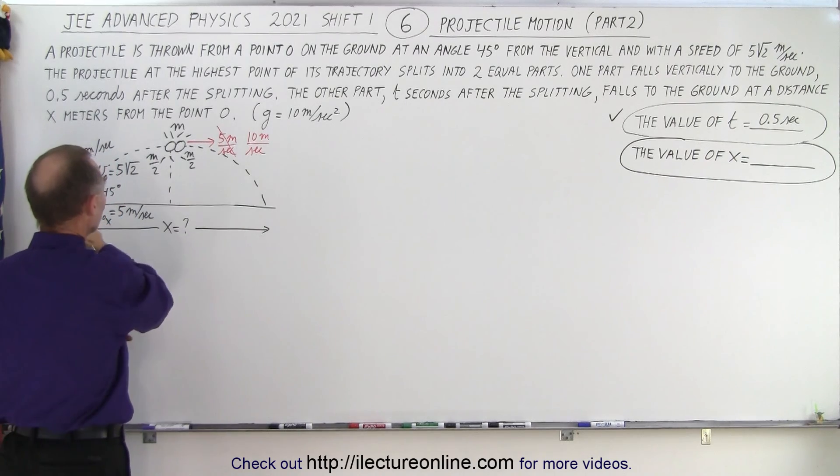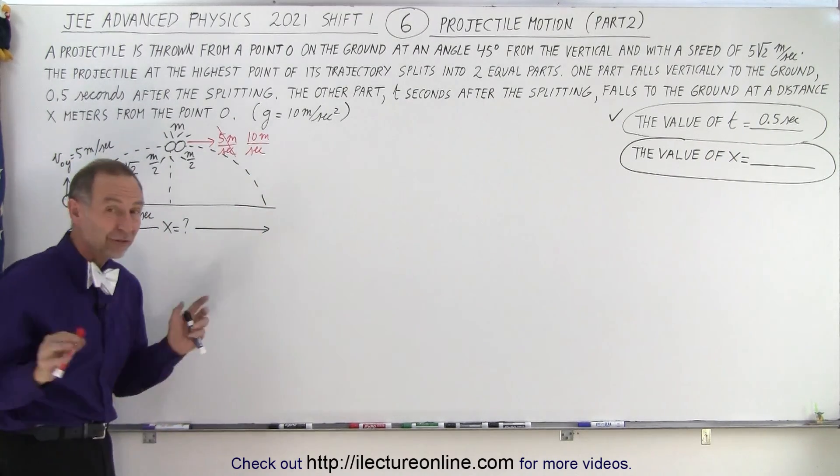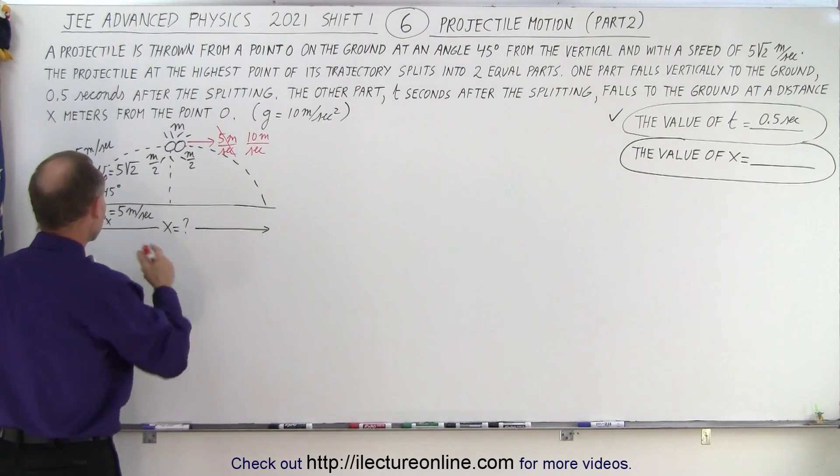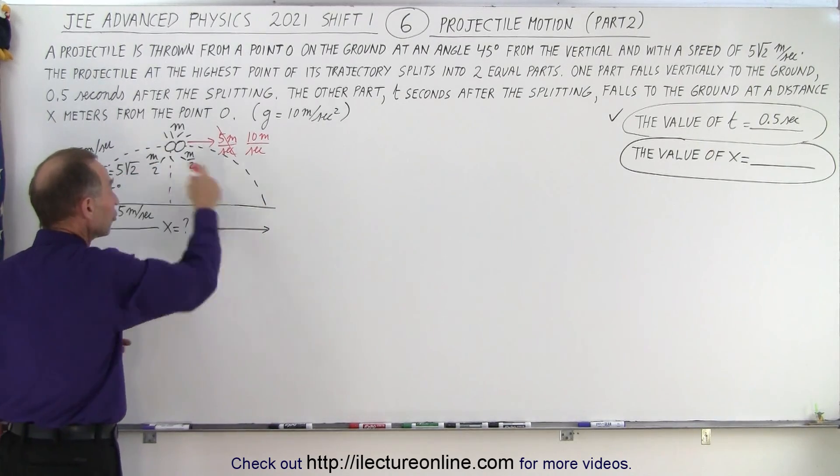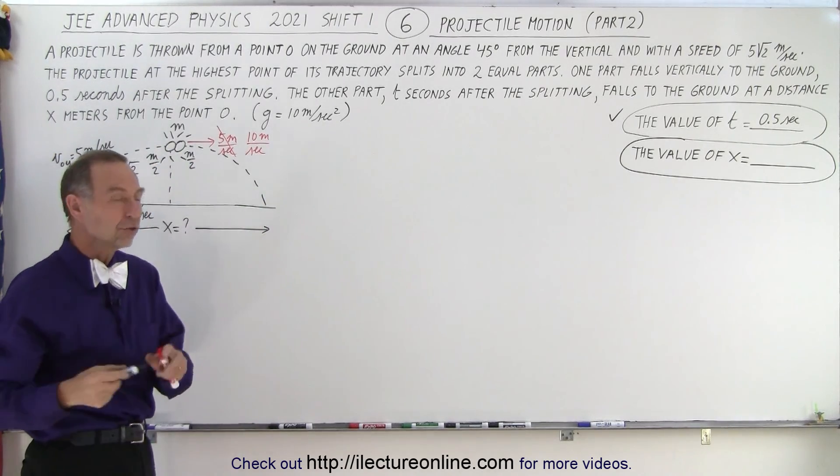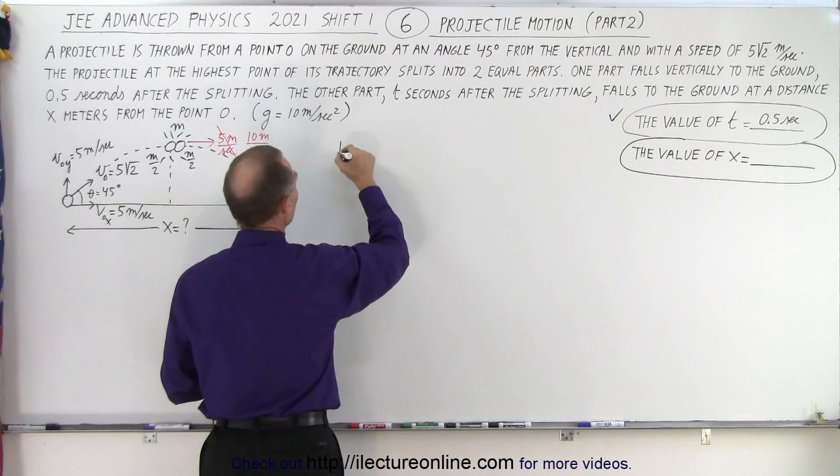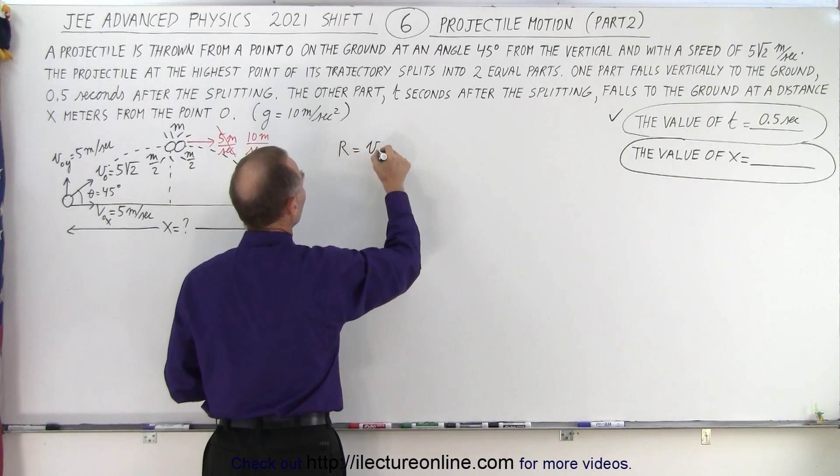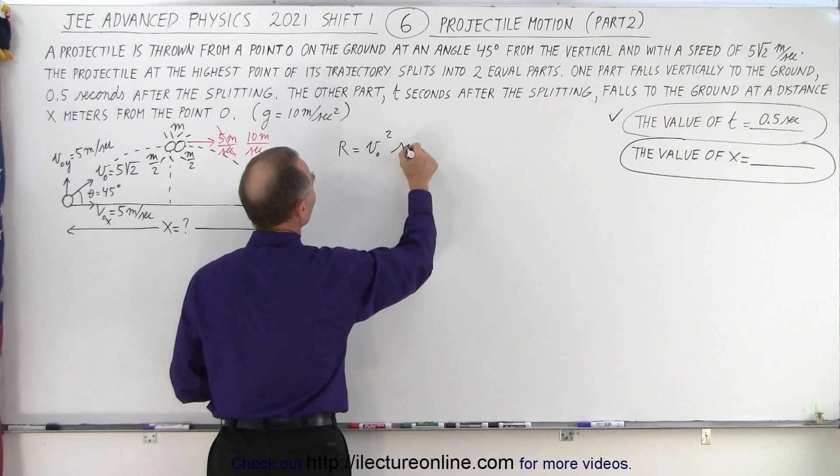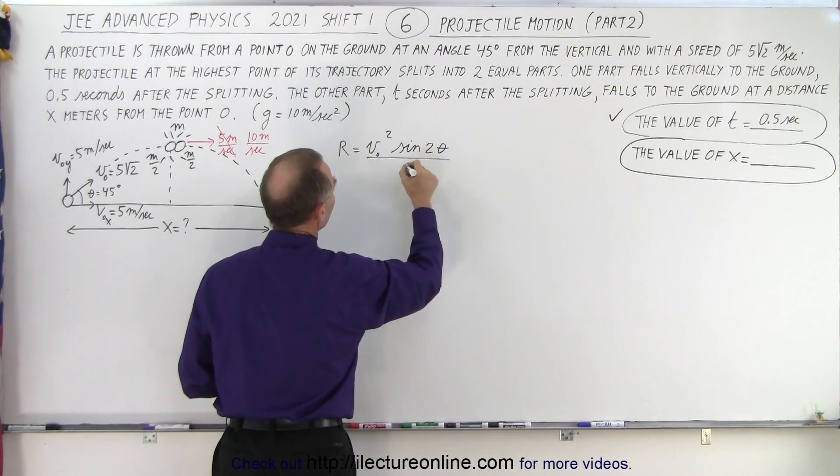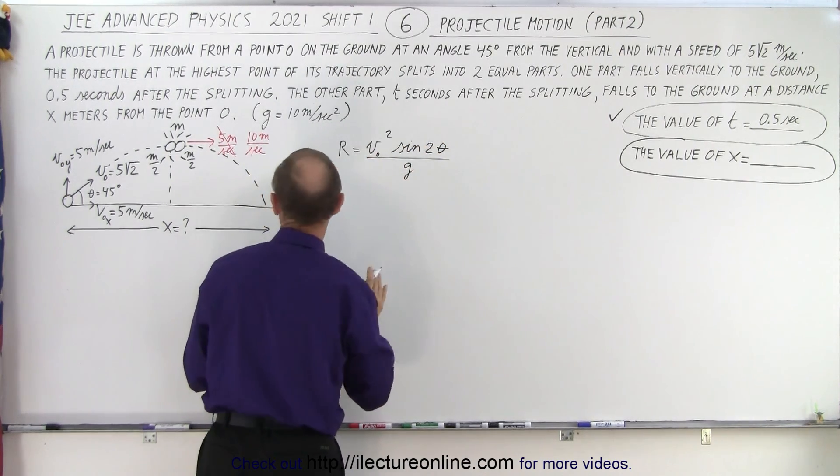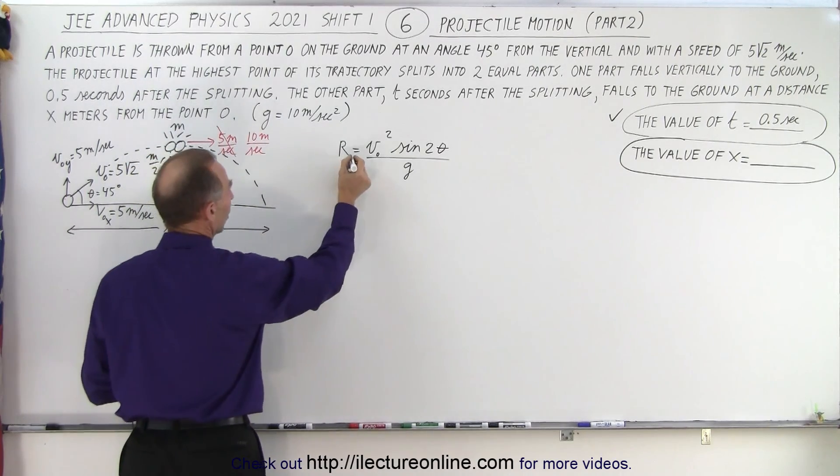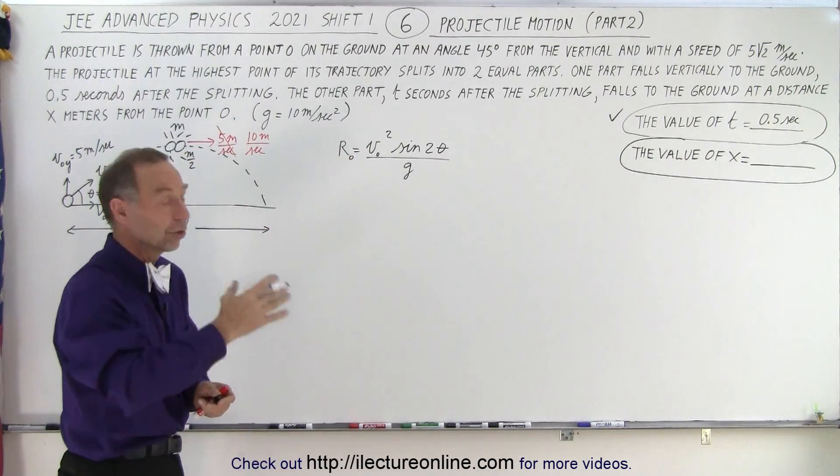So how far will the projectile go after this event? Well, let's find out how far it would have gone if it had simply gone its normal trajectory. And for that we can use the range equation. The range equation is equal to the initial velocity squared times the sine of twice the angle divided by the acceleration due to gravity. So that would be the original, let's call it r sub nought, that would be the original distance.